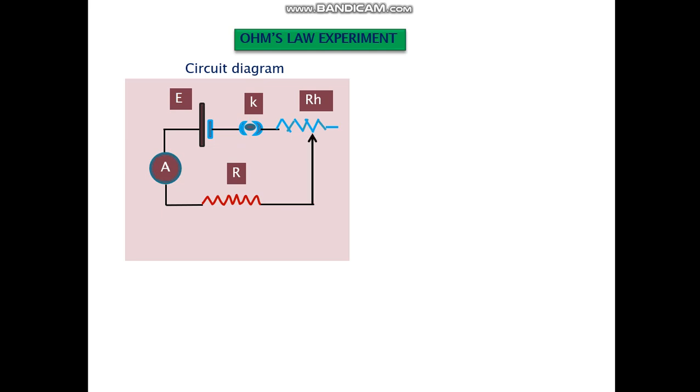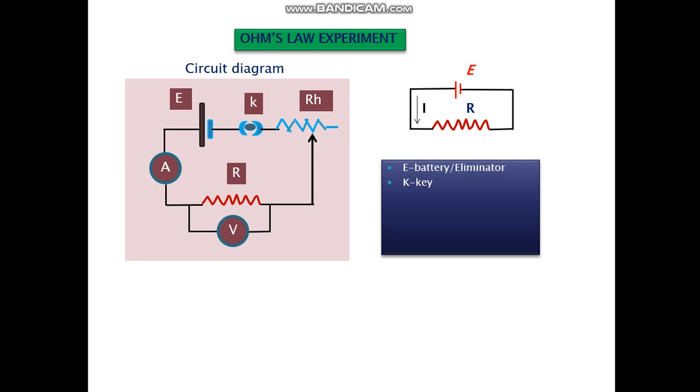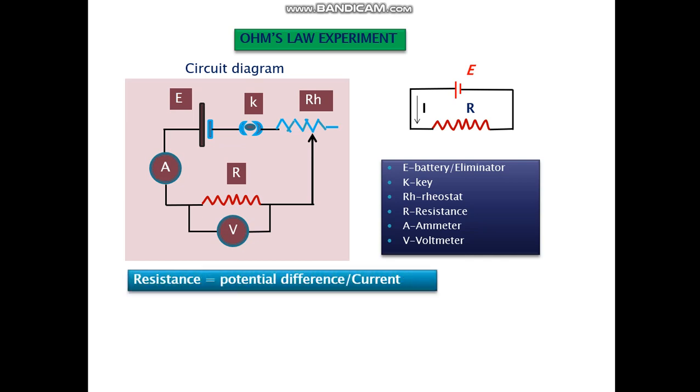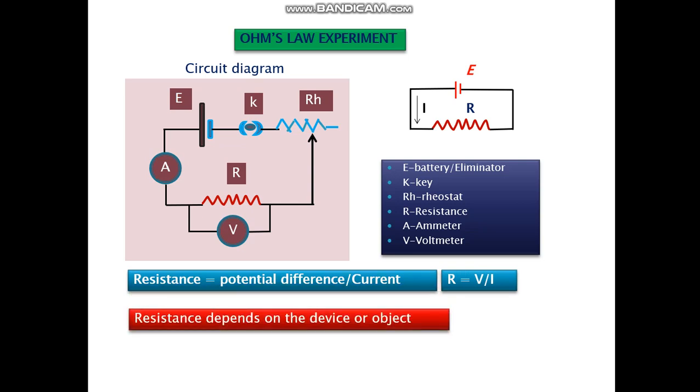Now let's talk about the Ohm's law experiment. We know Ohm's law states that when the physical state of the conductor remains constant, I is proportional to V. Current is proportional to the potential difference. So we make a circuit diagram here. We have a cell, a key K, a rheostat to vary the current. We have an ammeter in series to measure the current. And we have here the resistance under consideration. And it is connected in series. So all these are in series. And we connect the voltmeter to measure the potential difference across the resistance. It's in parallel. The circuit under consideration is this actually. We introduce the ammeter, the voltmeter. So we have here E is the eliminator, the battery, K is the key, RH is the rheostat, R is the resistance, A is the ammeter, V is the voltmeter. And we know resistance is potential difference upon current according to Ohm's law. So R is V upon I. Resistance depends on the device or the object.